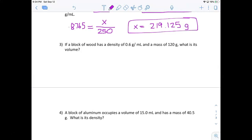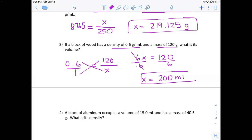Number three, they give me a density. They give me a mass. So what am I looking for? I'm looking for volume, which means my X is going to be down here. Density is 0.6. Mass is 120. So now this one's a little funky, guys, because when I cross multiply, I'm multiplying .6 by X and 120 by 1. Now, how do I get X by itself? I'm going to divide by .6. That's going to cancel out. X equals 120 divided by .6, and it's a volume.